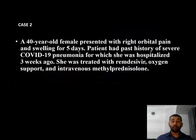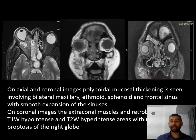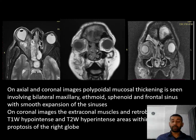Case 2: A 40-year-old female presented with right orbital pain and swelling for 5 days. She had a past history of severe COVID pneumonia for which she was hospitalized 3 weeks ago and was treated with remdesivir, oxygen support, and intravenous methylprednisolone. On axial and coronal images, polypoidal mucosal thickening is seen involving the bilateral maxillary, ethmoid, sphenoid, and frontal sinuses with smooth expansion. The extraocular muscles and retroorbital region show T1 hypointense and T2 hyperintense areas with proptosis of the right globe.